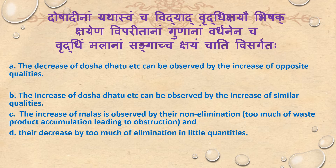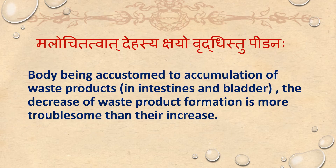Decrease of malas can be observed by the increase of similar quality. Too much waste product accumulation leads to obstruction, and decrease of malas is observed by too much elimination in little quantities. Malajitathwak — the body being accustomed to accumulation of waste products in the intestine and bladder, the decrease of waste product formation is more troublesome than their increase.